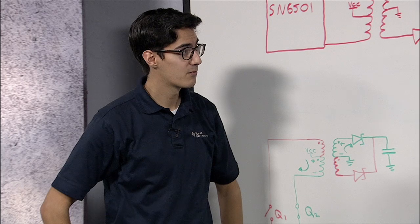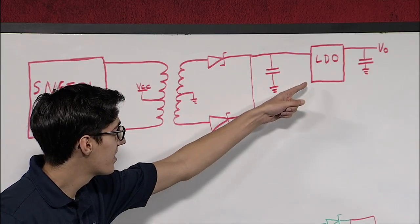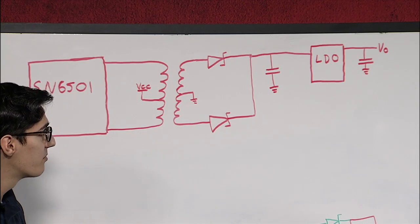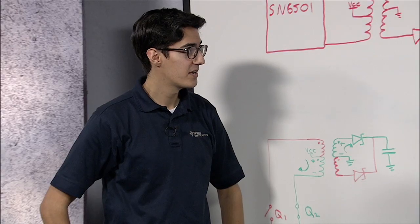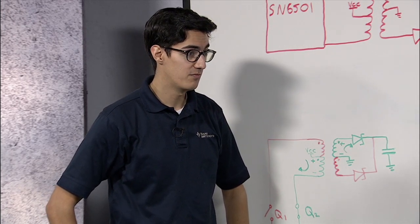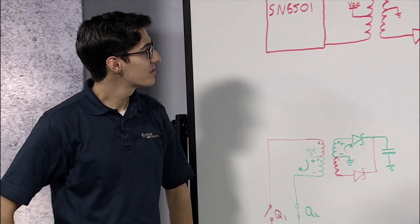Then, depending on whether there are load variations in the system, we can choose to add an LDO to maintain a constant output voltage. It's an extra component, so it adds cost and board space, but the output voltage can vary significantly as the load changes without one. That's the system in a nutshell.